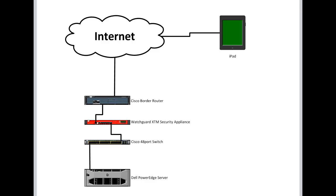On the corporate infrastructure side, the internet connection comes into their Cisco border router, which then connects to their WatchGuard security appliance. Everything to this point would be insecure — it would not have to occur within a VPN.